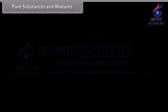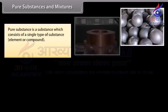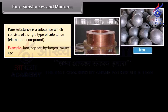Pure Substances and Mixtures. A pure substance is a substance which consists of a single type of substance, element, or compound. Examples include iron, copper, hydrogen, water, etc.